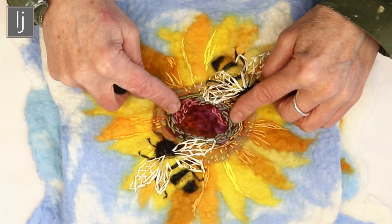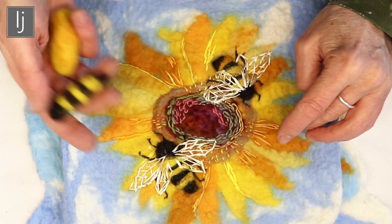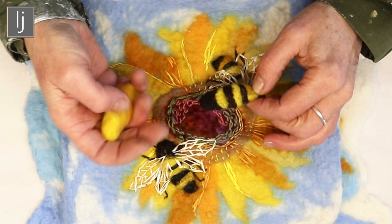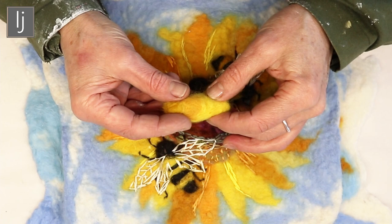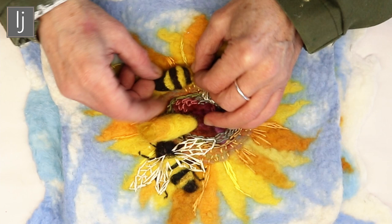I ended up with something like this, and the idea is you embroider some detail onto the sunflower. It's all pretty abstract and pretty simple, and then you apply the bees.